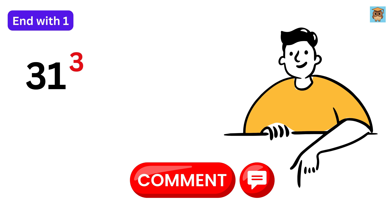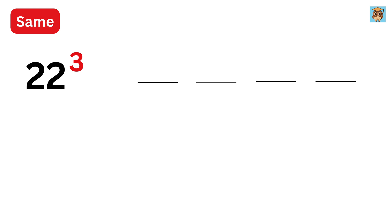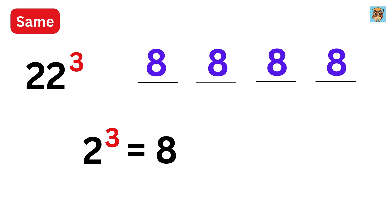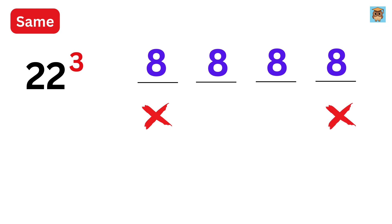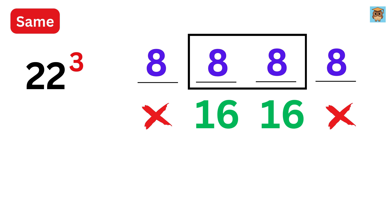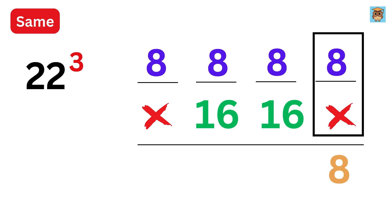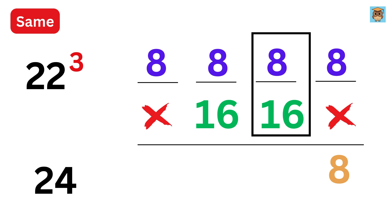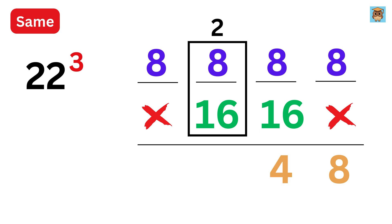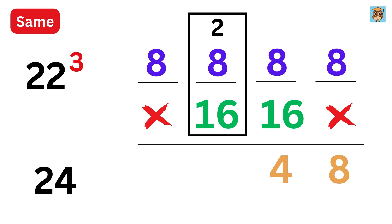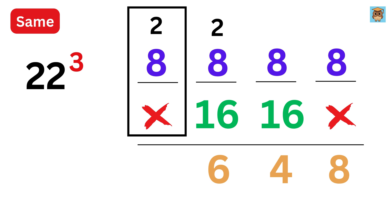Now category three — same digits. Consider 22 cubed. Take 2 cubed which is 8 and write 8 in all four blanks. Then put cross marks and double the middle numbers to get 16. Add: 8, then 8 plus 16 is 24 so write 4 and carry 2, then 8 plus 16 is 24 plus carry 2 is 26 so write 6 and carry 2, and finally 8 plus 2 is 10.